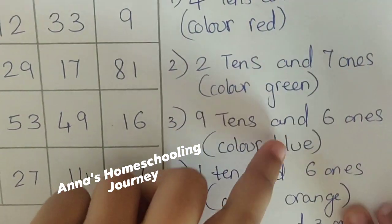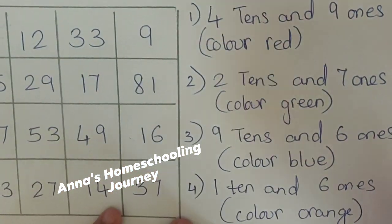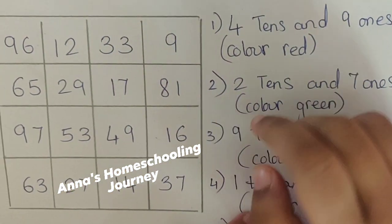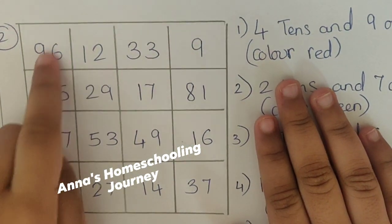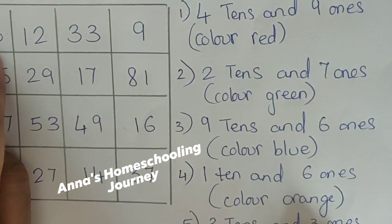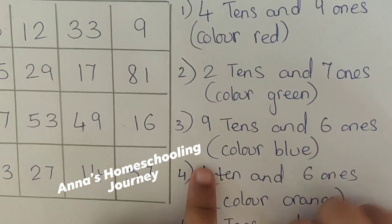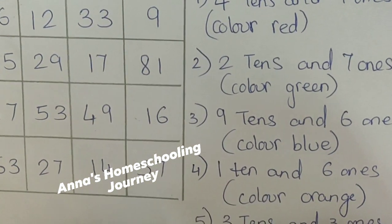9 tens and 6 ones. Very good. It will be 96. So, the color is blue. So, you need to color it blue.